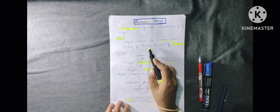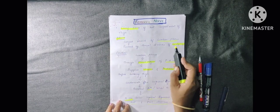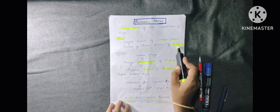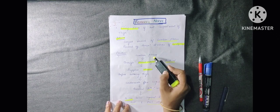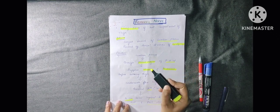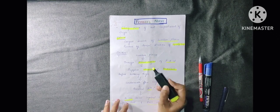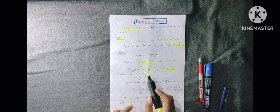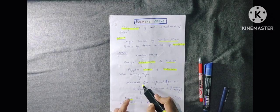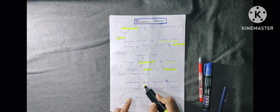The root value is the dorsal division of L2, L3, and L4. It passes through the psoas major muscle, then comes to the thigh, and in the femoral triangle the femoral nerve lies lateral to the femoral vein and femoral artery.